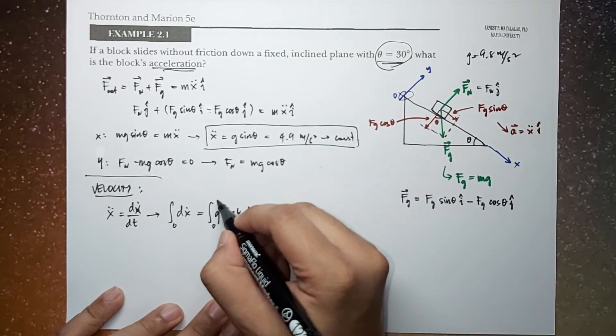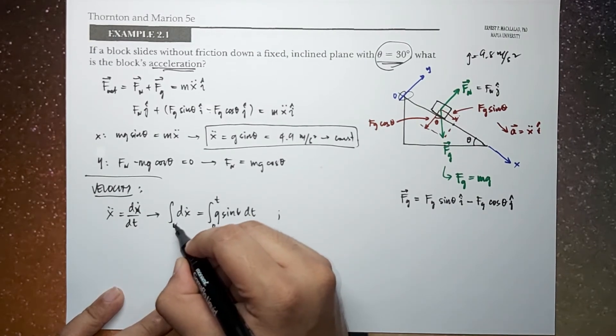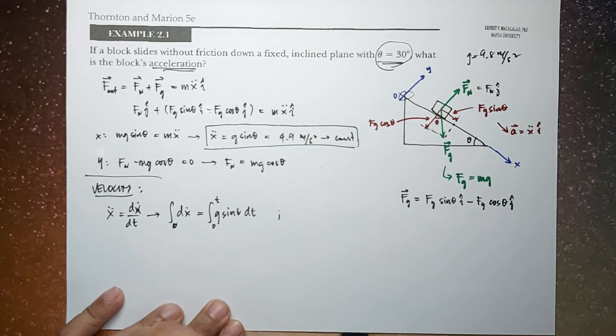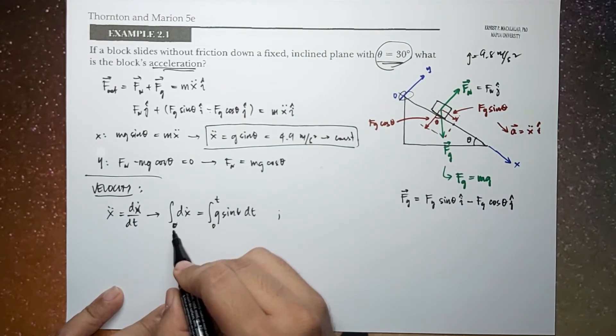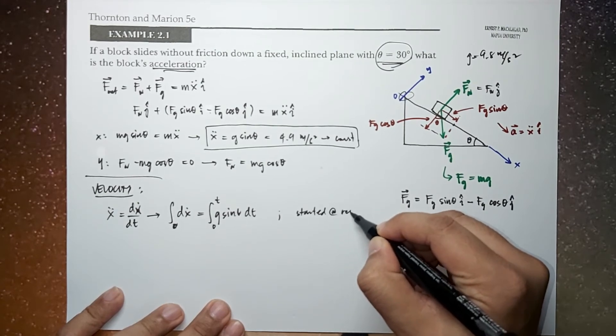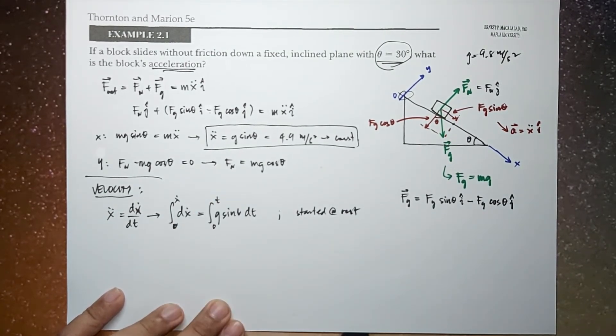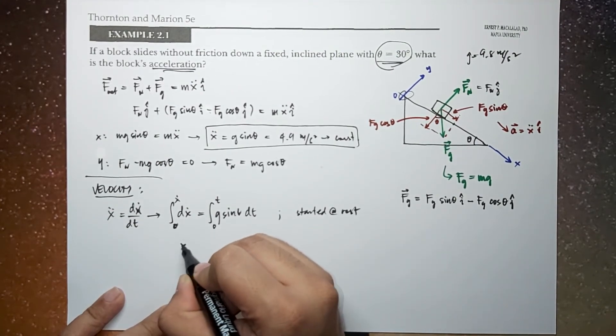the velocity started at rest. So let's say started at rest. And at a later time t, you have your velocity. So integrating this, we now have x dot, which is equal to g sin theta t.